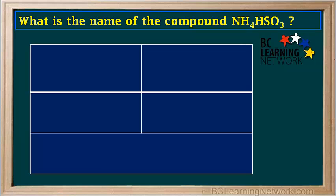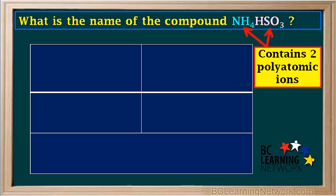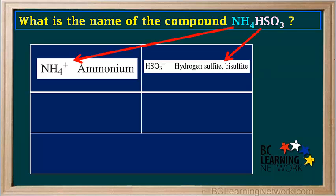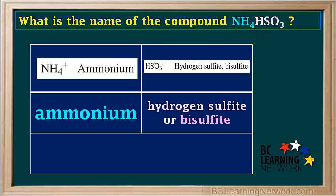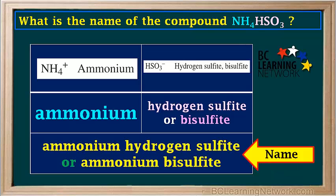Let's do another example. What is the name of the compound NH4HSO3? If we look at the formula and the ion table carefully, we can see that this compound is made up of two polyatomic ions: NH4 and HSO3. Looking on the ion table, we find their names: ammonium and hydrogen sulfite, or bisulfite. We can use either hydrogen sulfite or bisulfite for HSO3⁻. Note that sulfite is spelled with an F, though in some Canadian textbooks it's spelled with a PH — either spelling is acceptable. So the positive ion is ammonium and the negative ion can be called either hydrogen sulfite or bisulfite. Therefore, the final name of the compound is either ammonium hydrogen sulfite or ammonium bisulfite.